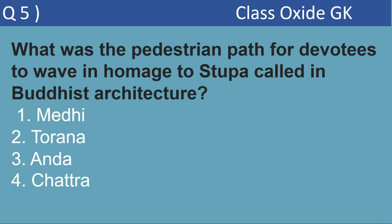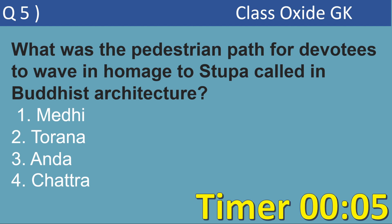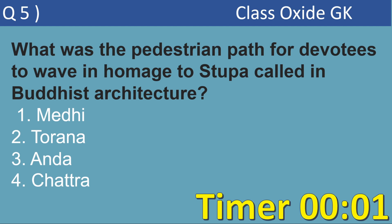Next MCQ. What was the pedestrian path for devotees to walk in homage to a Stupa called in Buddhist architecture? Options are Medhi, Toran, Anda, Kshatra. If you have studied art and culture properly, you can answer this easily. The answer is option 1, Medhi.